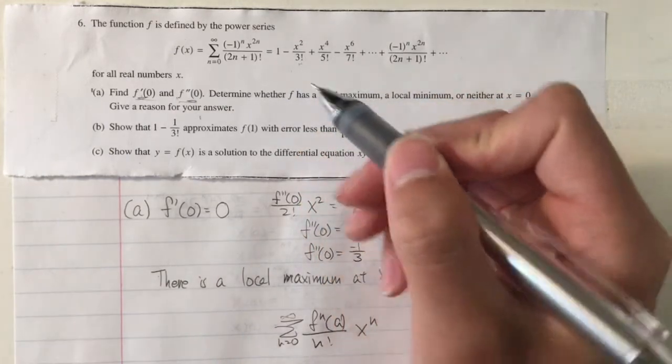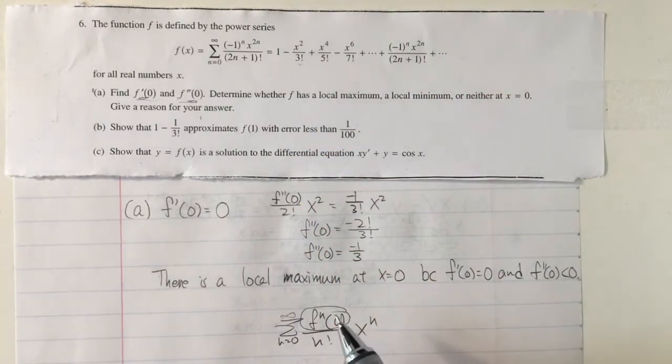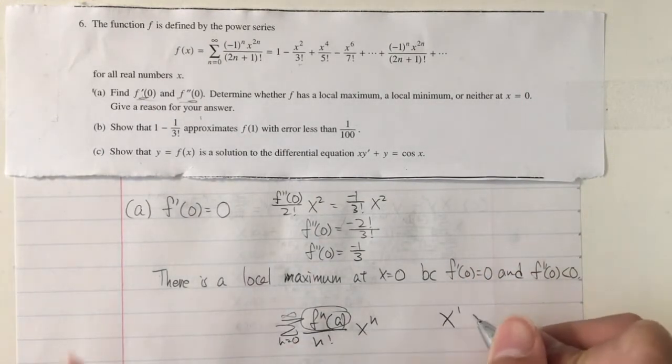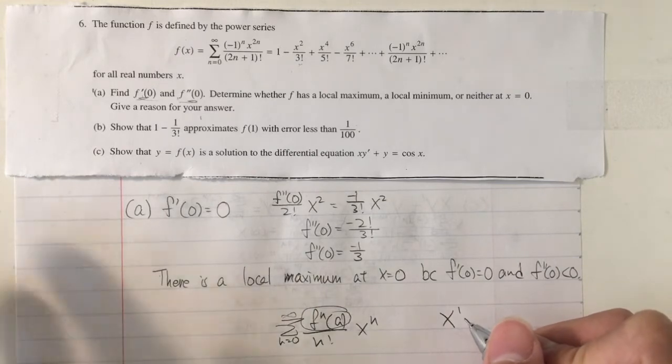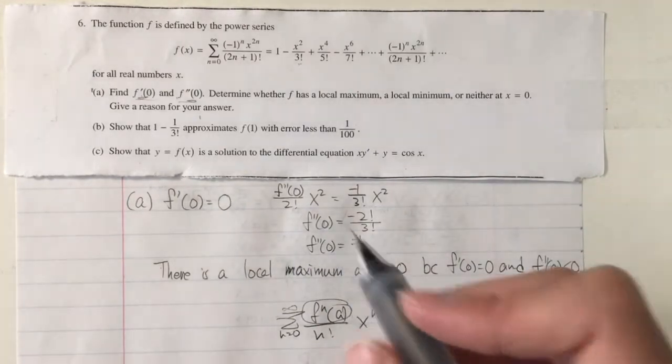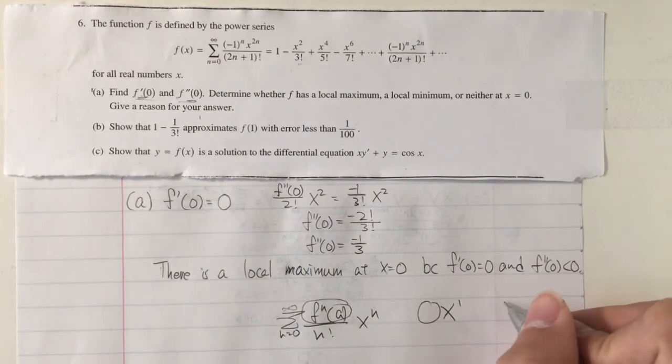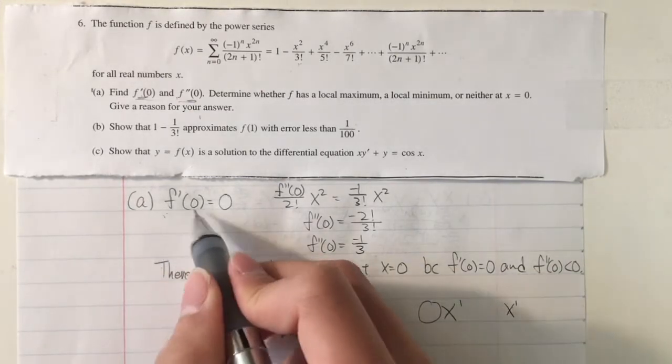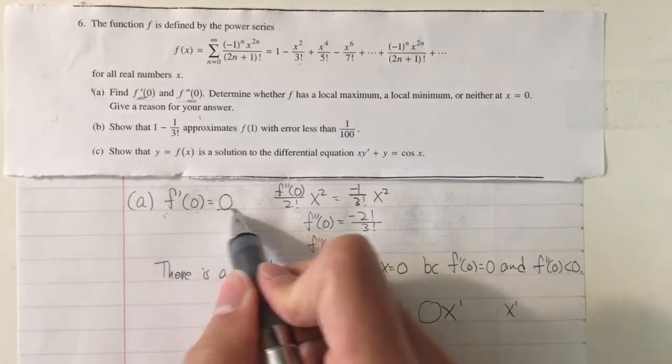So now if we look at the first derivative, it's always going to be the coefficient of the x term to the first power. Because if you think about it, you're taking the derivative. And if you take the first derivative, that x is going to go away. And what's in front of it, it's going to be left as its derivative. And in this series, there is no term where it is the x to the 1st power. That means it's 0. So the first derivative at point 0 is 0.